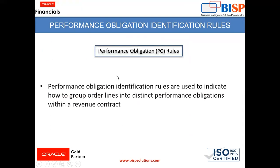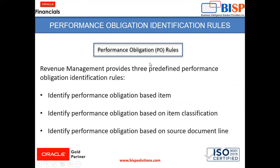The next topic is the performance obligation identification rule. These rules are used to indicate how to group order lines into distinct performance obligations within a revenue contract. There are three predefined rules in the instance: first, identify performance obligation based on item; second, based on item classification; and third, based on source document line. You can use these three predefined rules or create your own.